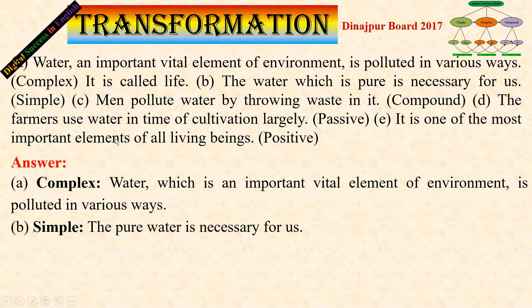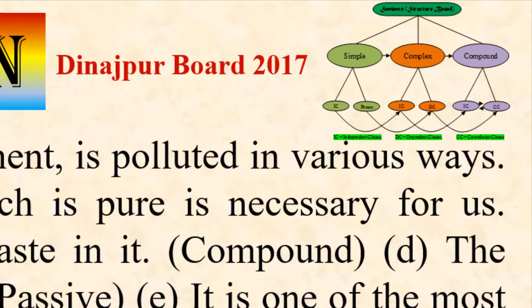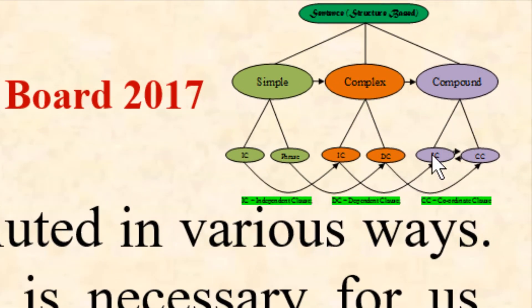Number C: Man polluted water by throwing waste in it. Convert to compound. With IC and CC we see the compound structure. IC and CC — this is the compound sentence.